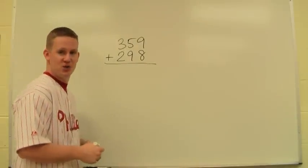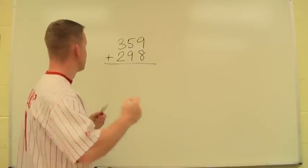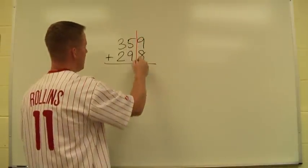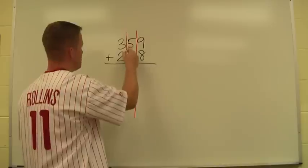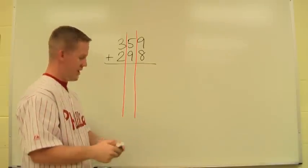Now with the column addition method, it's going to look a lot like standard addition with one key difference. I'm going to actually make columns in between each of my place values. So again, I'm going to do it by place value. This time I am going to start on the right, however.